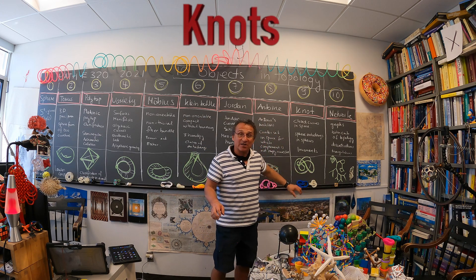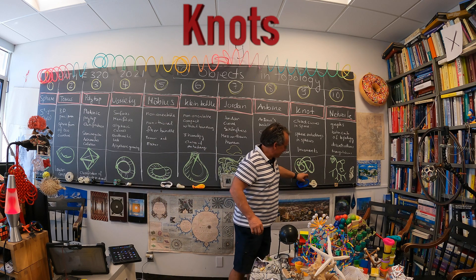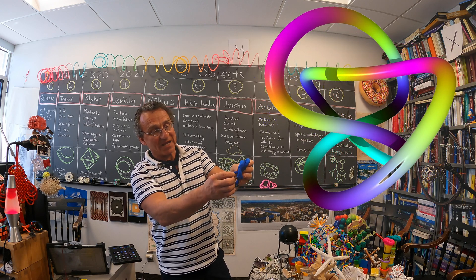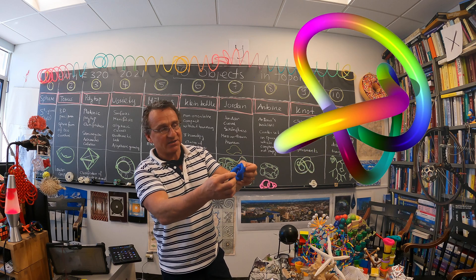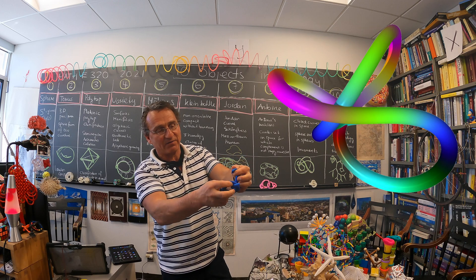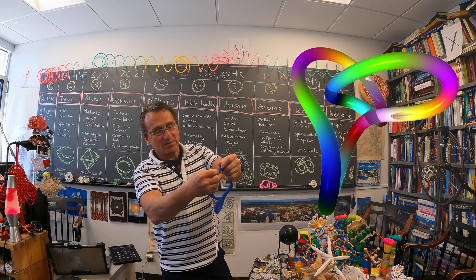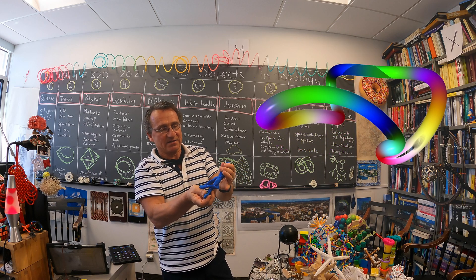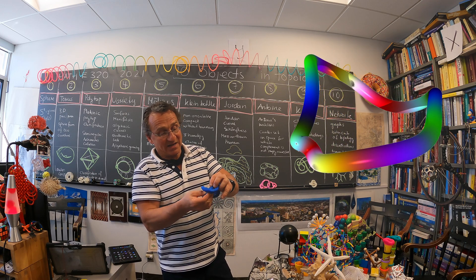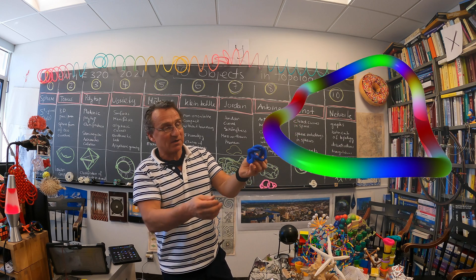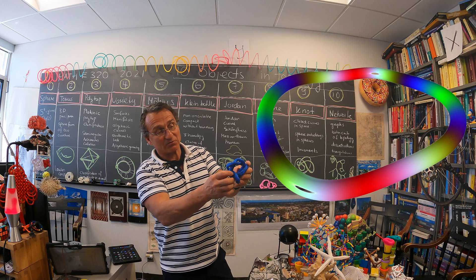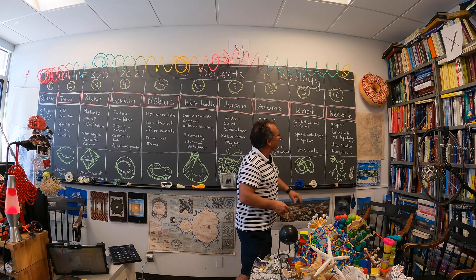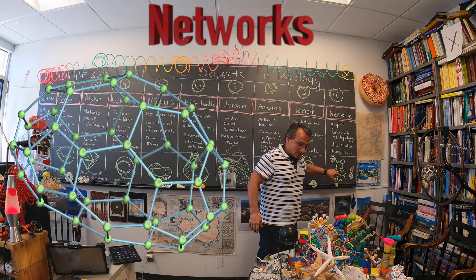The next object is very much studied still today — knots. I built one with this clay; it's a closed curve in space, and the question is always: can you unknot it without cutting through? You can of course make it trivial by cutting and reconnecting. You can build quite complicated knots, and the question is whether you can deform them to the trivial knot or not. That's another example — the figure-eight knot.